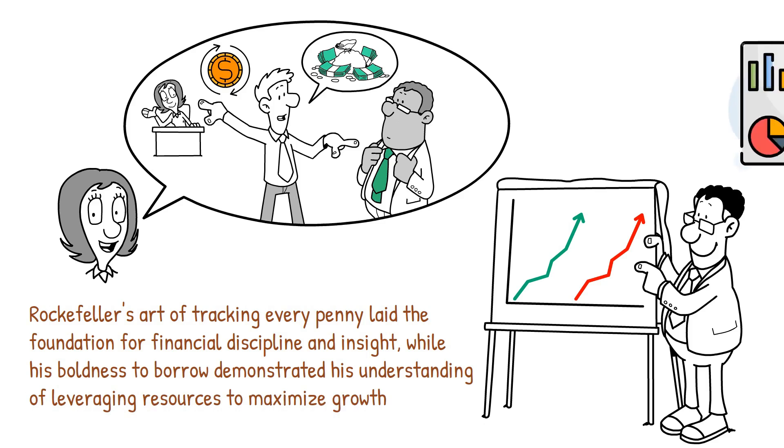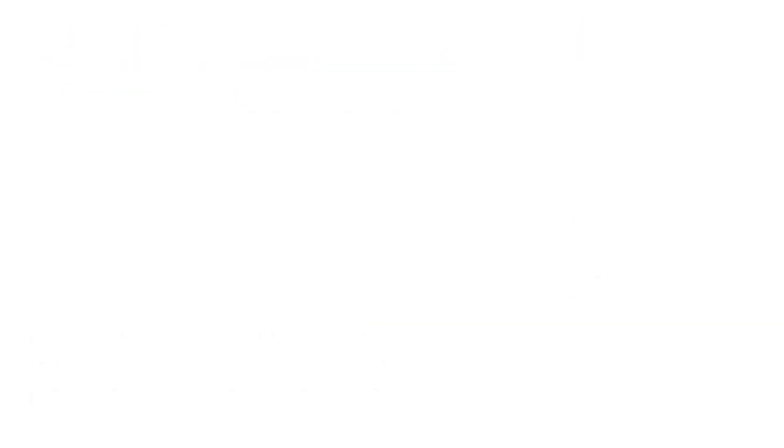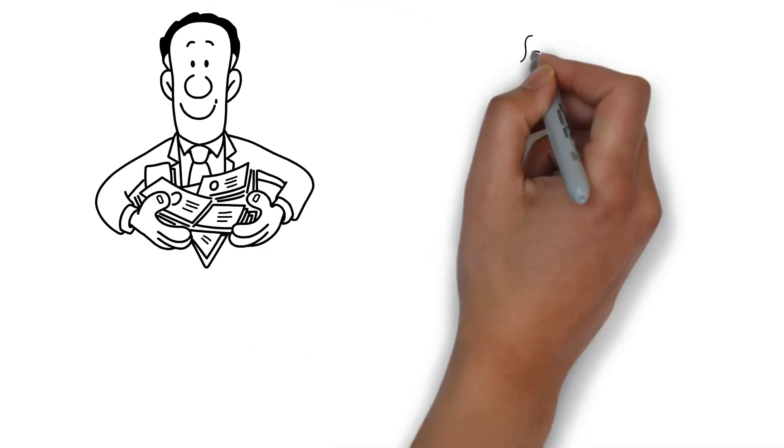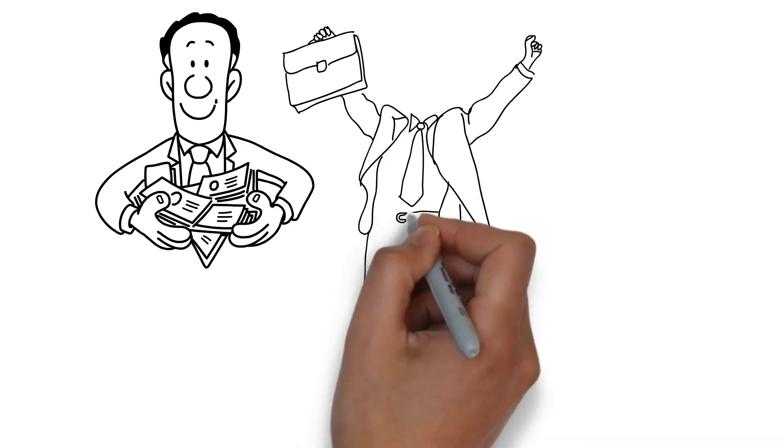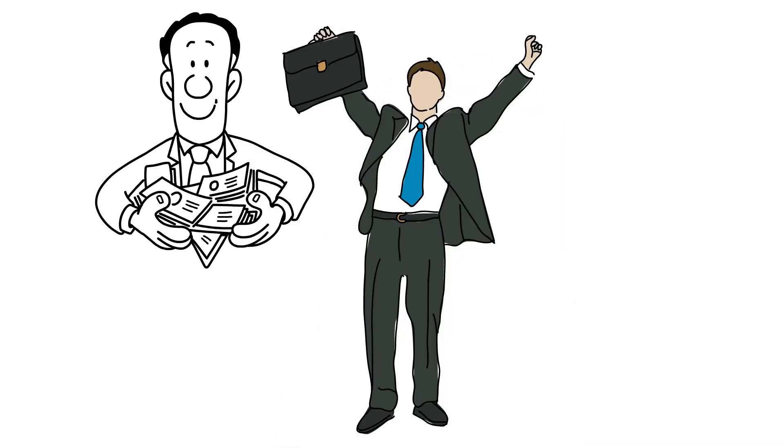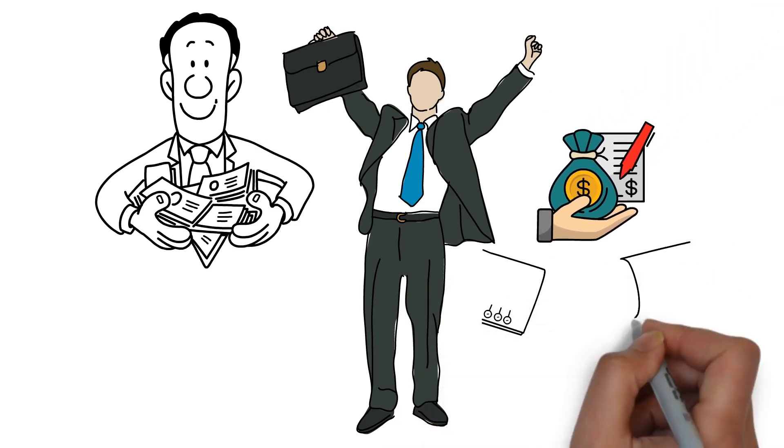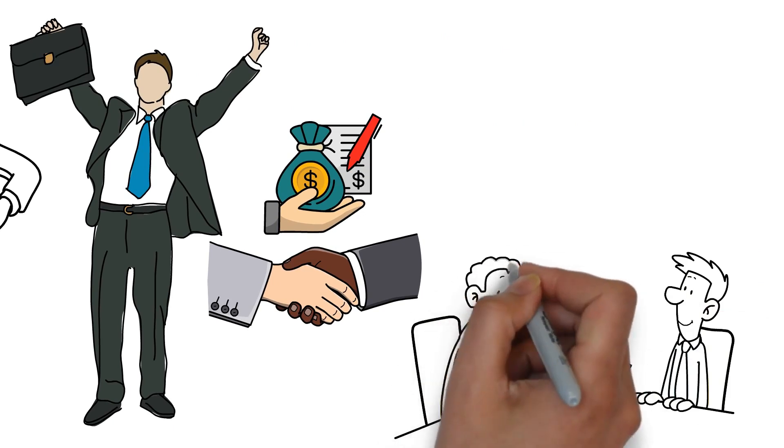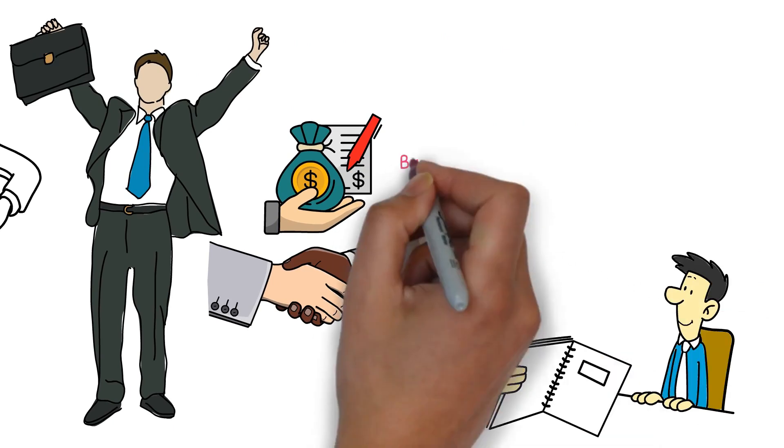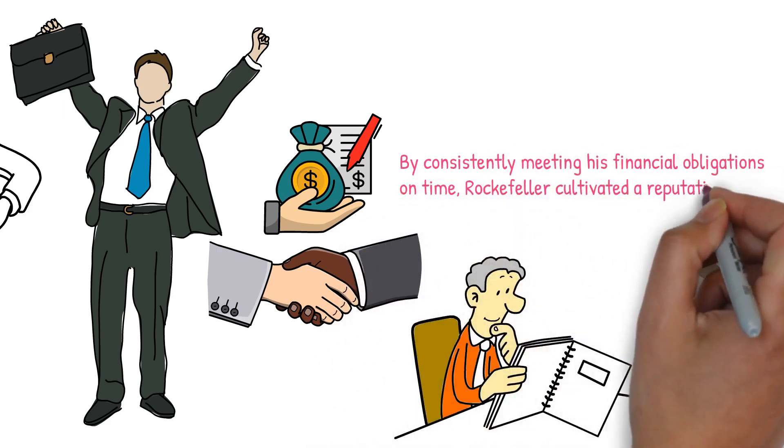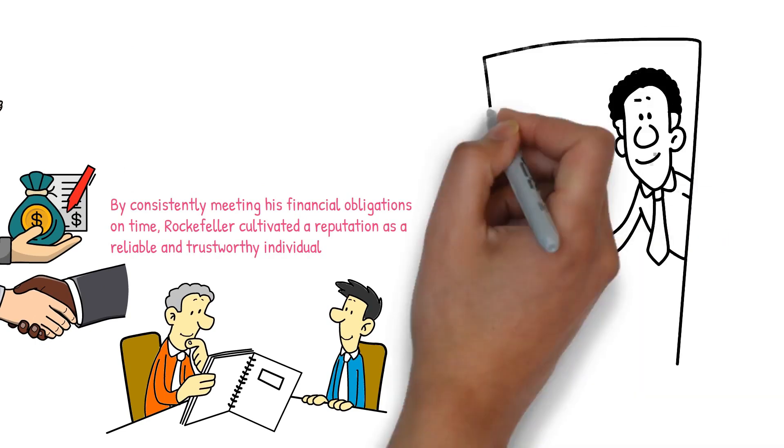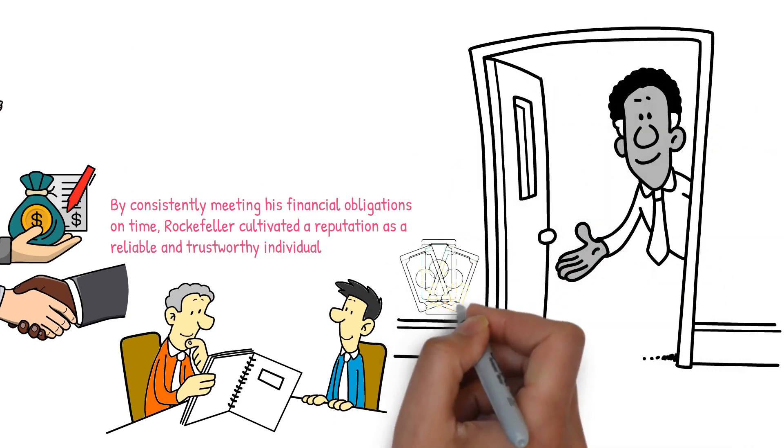Fulfilling Financial Obligations. Rockefeller's approach to fulfilling financial obligations was marked by steadfast commitment and integrity. This trait played a crucial role in building his reputation and trustworthiness in the business world. He understood that every financial commitment, whether it was a small loan repayment or a large business transaction, was a matter of honor and credibility. This principle was especially significant in the early stages of his career, where maintaining a solid reputation was crucial for securing future investments and partnerships. By consistently meeting his financial obligations on time, Rockefeller cultivated a reputation as a reliable and trustworthy individual. This reliability opened doors to new opportunities and partnerships, as financiers and business associates were more willing to engage with someone known for their financial integrity.